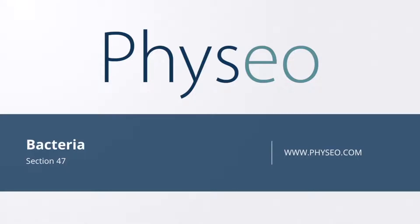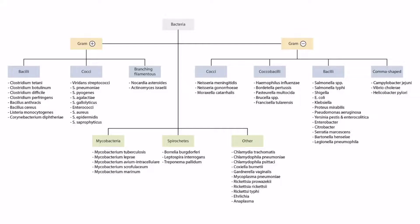Welcome to section 47 of Bacteria. This is our Bacteria overview figure, and in this video we'll be discussing Chlamydia trachomatis, Chlamydophila pneumoniae, and Chlamydophila psittaci. You can see all three of these organisms right here.